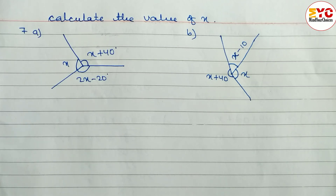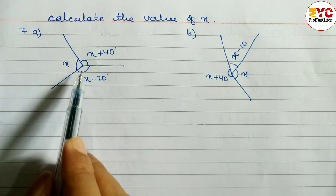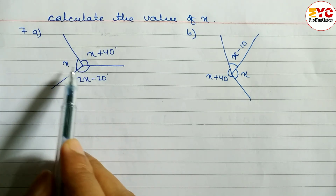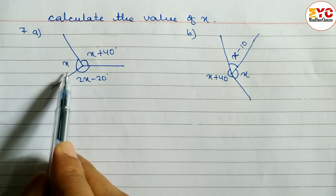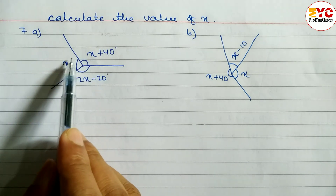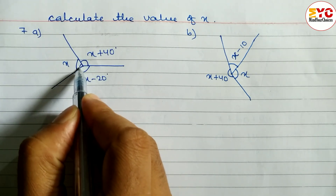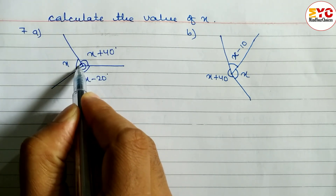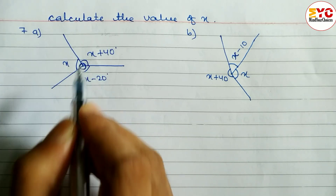In this video we will learn how to find the value of x. These questions were taken from the chapter on angles and geometry. We have three angles — one, two, three — and when you add all these angles you get a complete turn, a whole turn.